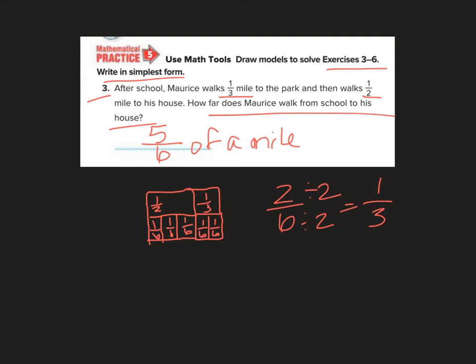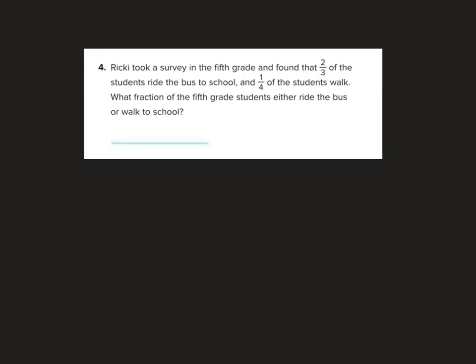Okay, I really wish we had fraction tiles but we don't so you just have to bear with me here. Let's look at the next one. Ricky took a survey in the fifth grade found out that two thirds of the students ride the bus to school and one fourth of the students walk. What fraction of the fifth grade students either ride the bus or walk to school? Great, for this one we are going to have to do twelve because we know when we have a denominator of four and three we have to do twelve. So let's get started here. So I'm going to put down one third, two one thirds, and then I need a one fourth which is going to be a tad bit smaller.